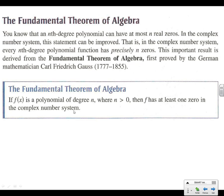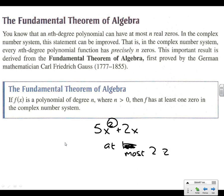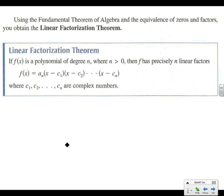The fundamental theorem of algebra says that if we have a polynomial of degree n, then we'll have at least one zero in the complex numbers. So we also know that something like 5x² + 2x is going to have at most two zeros that are real. But now, from last chapter, we know about all our imaginary numbers. Now we get to say that because of the linear factorization theorem, we're going to have exactly n zeros — some real, some imaginary — but they're going to add up to exactly the degree.